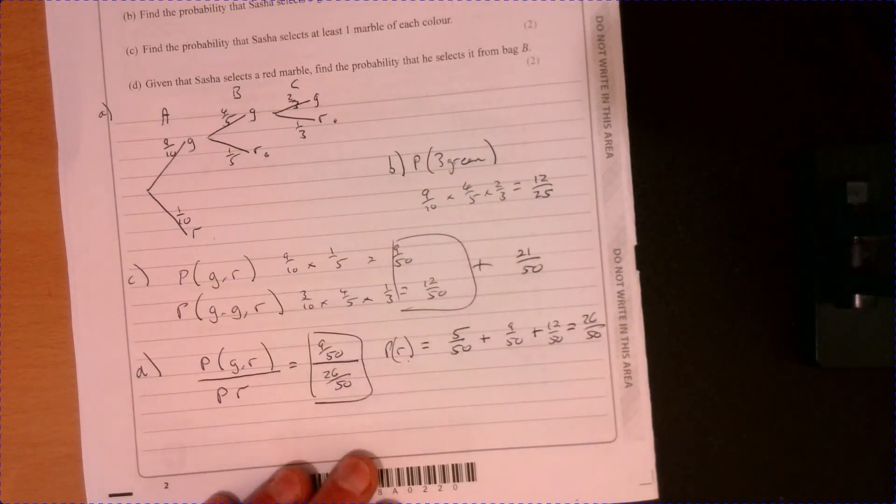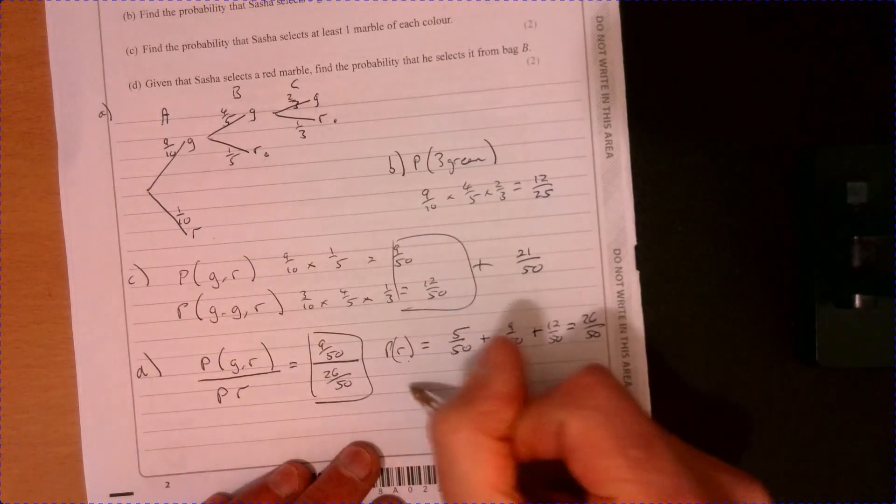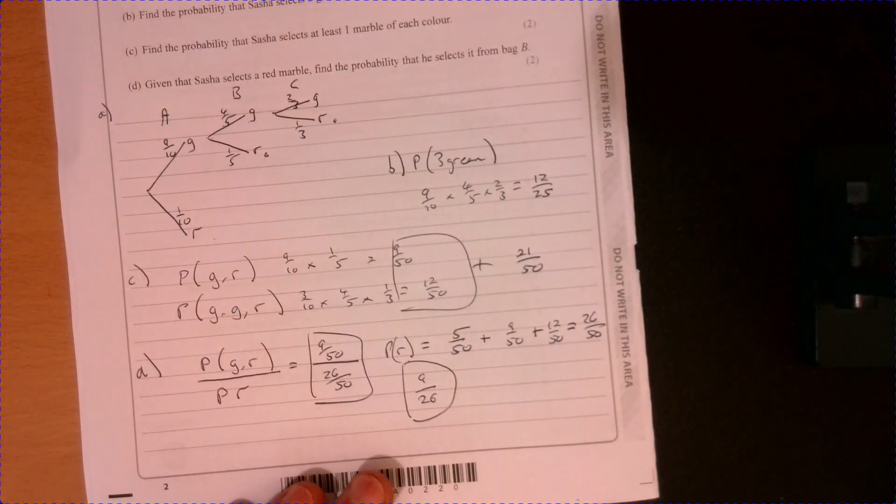Obviously, you wouldn't write your answer like that. We're going to write it as 9 over 26. Just like that. There. Right. There we are. That question's done.